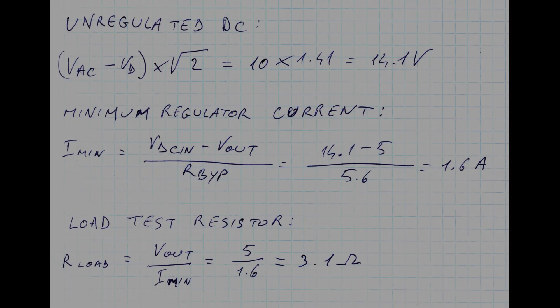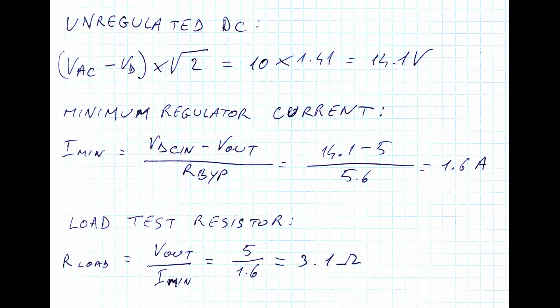Whenever we have a bypass resistor between input and output of a linear regulator, we need to calculate the minimum load current that allows the regulator to work at the rated output voltage. At any load current less than the minimum one, the output voltage will be higher than the nominal one. First, we have to calculate the input voltage to the regulator, that is the peak rectified AC voltage. We don't need to be super precise with calculations.